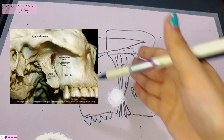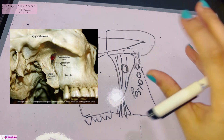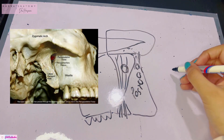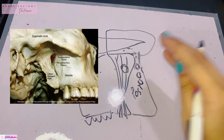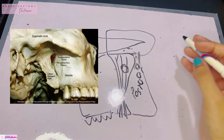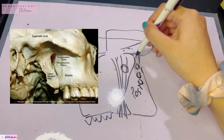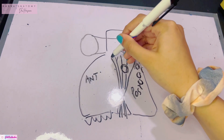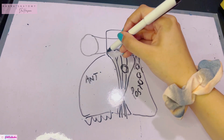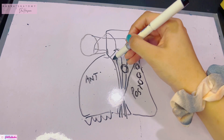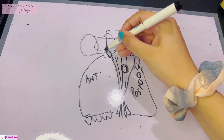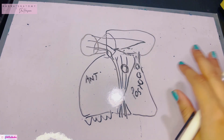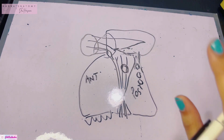The lateral boundary of the fossa is the pterygomaxillary fissure, through which you enter the fossa. This is a very tiny fossa located behind the maxilla. The superior boundary is formed by the undersurface of the body of the sphenoid bone, and right here there is the inferior orbital fissure, which opens into the orbit — a communication with the orbit.